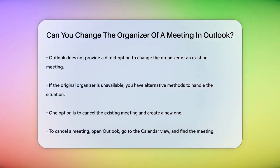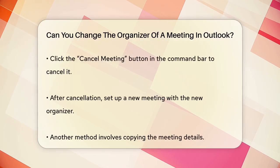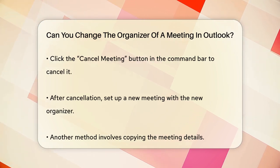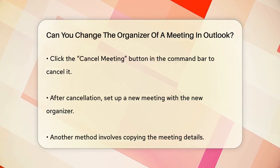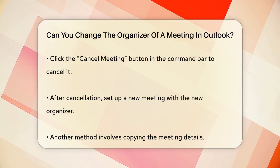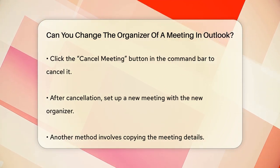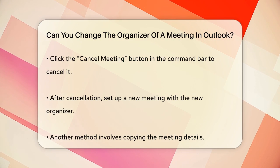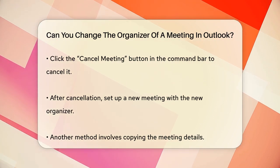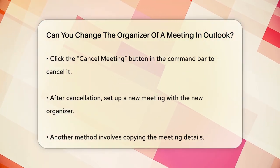One method is to cancel the existing meeting and set up a new one. Open Outlook, go to the calendar view, find the meeting you need to modify, and click on it. Look for the Cancel Meeting button in the command bar and click it. This will cancel the meeting, and you can then set up a new meeting with the new organizer.